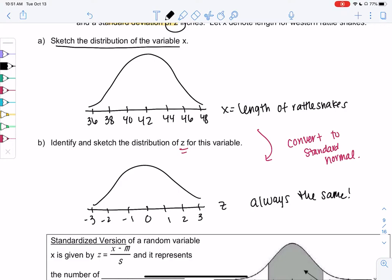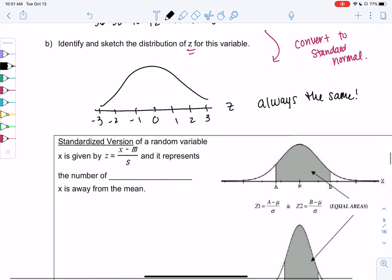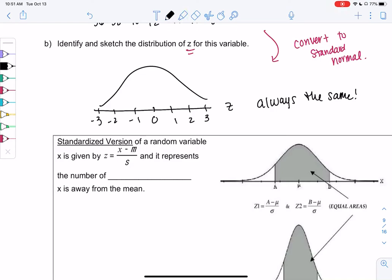So this one's going to be really useful because we can use those calculator functions from last section to make conclusions about any data set. So the standardized version of a random variable is the data value minus the mean, so x minus mu all over the standard deviation, the same z-score formula we've been using all semester. So we've actually done this before. We just didn't do it for this reason. And it represents the number of standard deviations x is away from the mean.